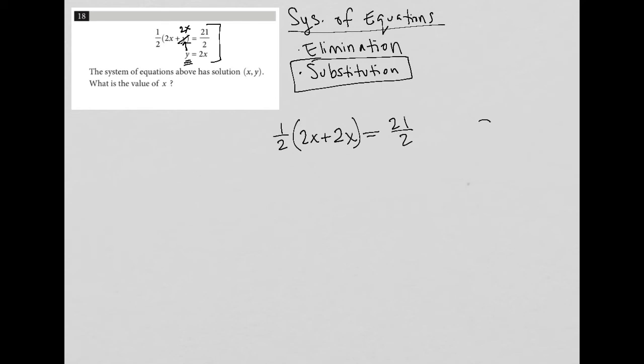I can now simplify this further so I have one half times 2x plus 2x is 4x equals 21 over 2. One half of 4x is 2x so 2x equals 21 over 2. Then what I'm going to do because I have a fraction on the right hand side I'm going to treat 2x as 2x over 1.